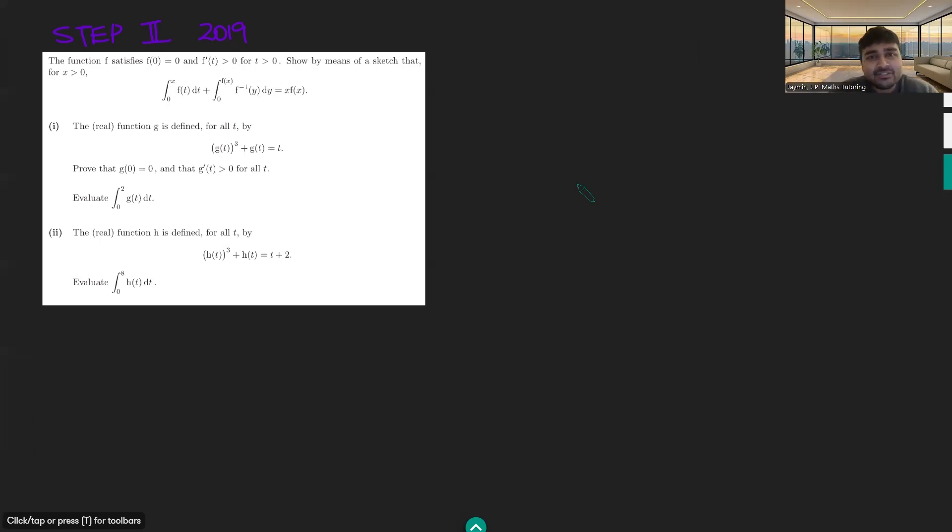Today I've got a problem from Cambridge University's entrance exam, STEP. We have the function f satisfies f(0) = 0, f'(t) > 0 for t > 0. Show by means of a sketch that if x > 0, the integral from 0 to x of f(t) dt plus the integral from 0 to f(x) of f inverse of y dy equals x times f(x).